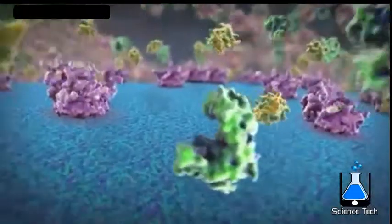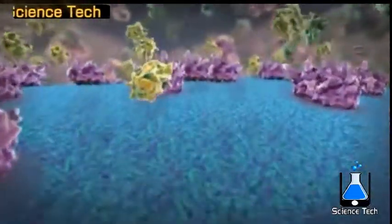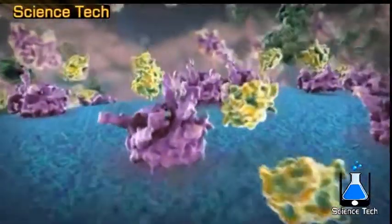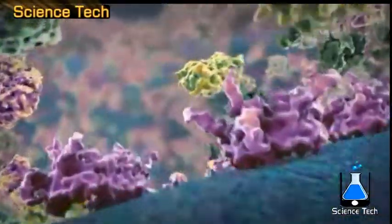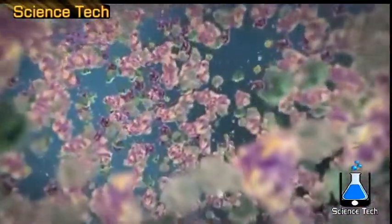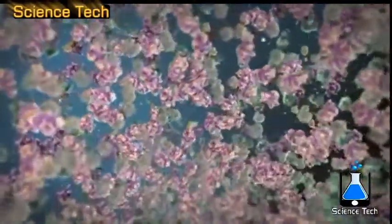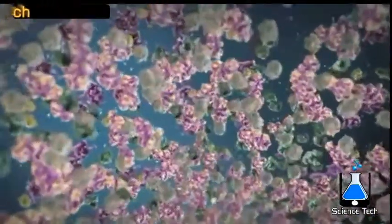After entering the inner membrane translocator, many of these proteins do not completely cross the membrane, but instead are released into the membrane and diffuse laterally. They then remain embedded in the inner membrane or are cleaved, releasing a portion into the intermembrane space.